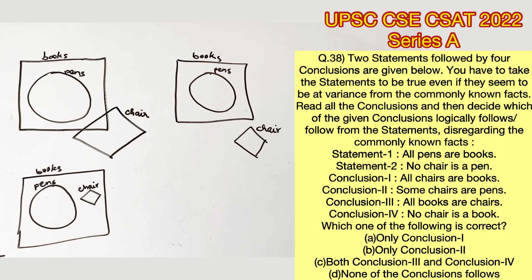Now let's check with the conclusions. The first conclusion says all chairs are books. Only in this case it follows the conclusion. The other cases do not follow the conclusion, so conclusion 1 is not true.